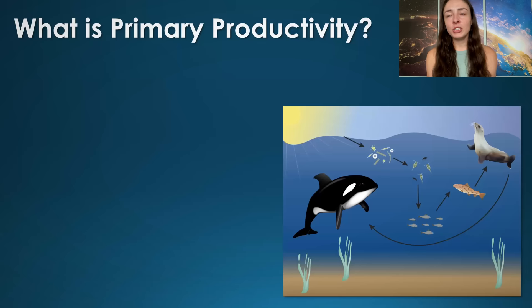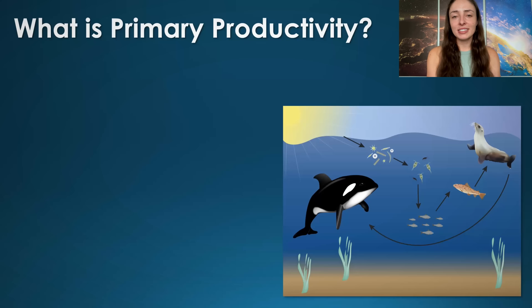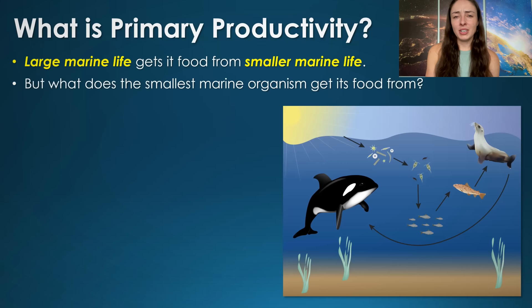Before we talk about ocean fertilization, I have to introduce the term primary productivity. The process of primary productivity is central to ocean fertilization. We all know the food chain — larger marine life eats smaller marine life and so on. But what does the smallest marine organism eat?